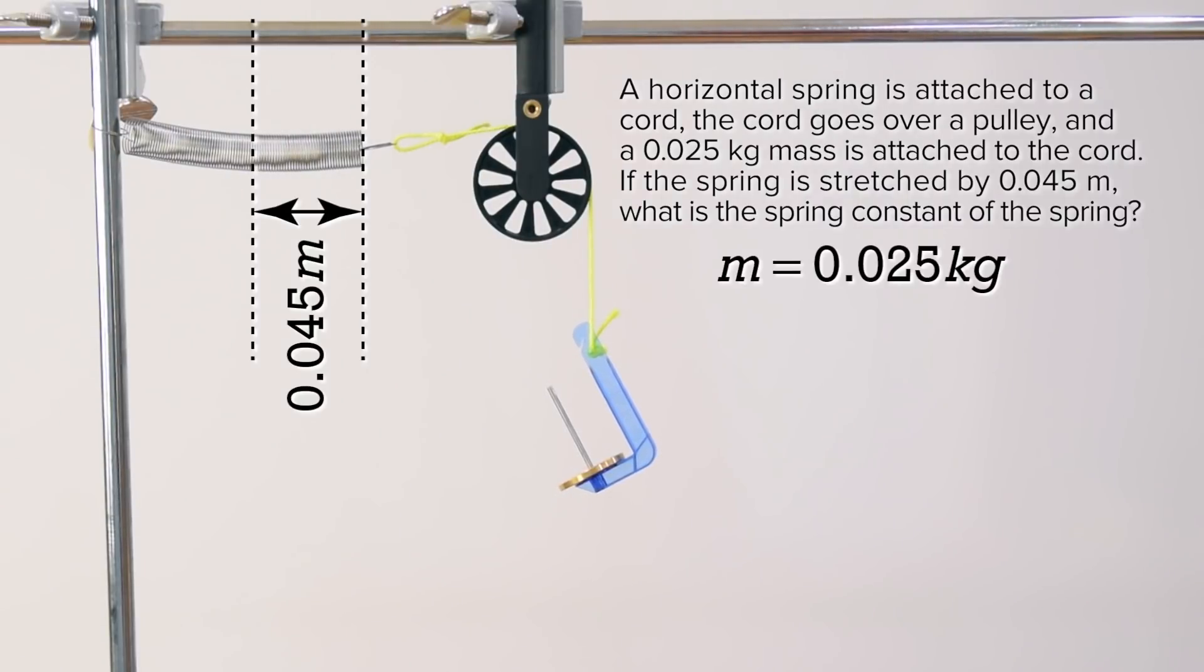Mass equals 0.025 kilograms. x, the displacement from equilibrium position, equals 0.045 meters and lowercase k, the spring constant, equals question mark.